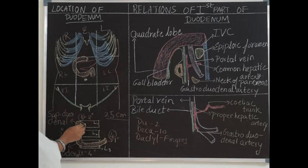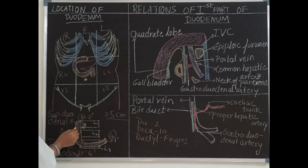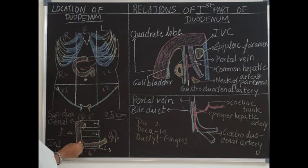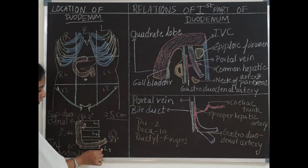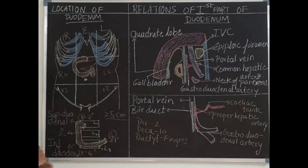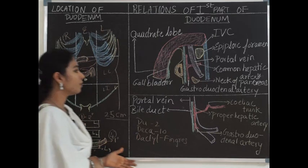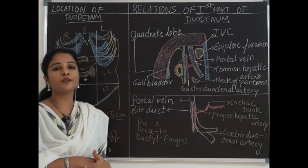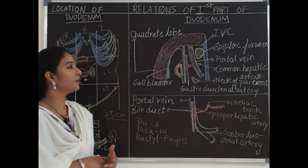The first part is present at the level of L1, the second part extends from L1 to L3, the third part is horizontally related to the lower border of L3, and the fourth part turns upward towards L2. We shall begin with the first part of duodenum.